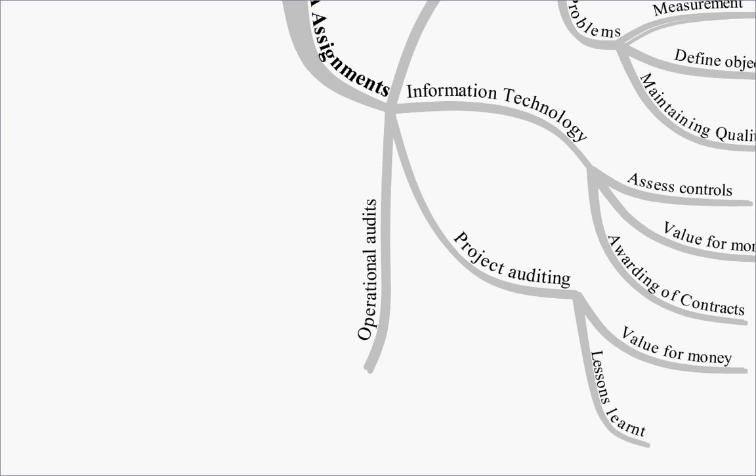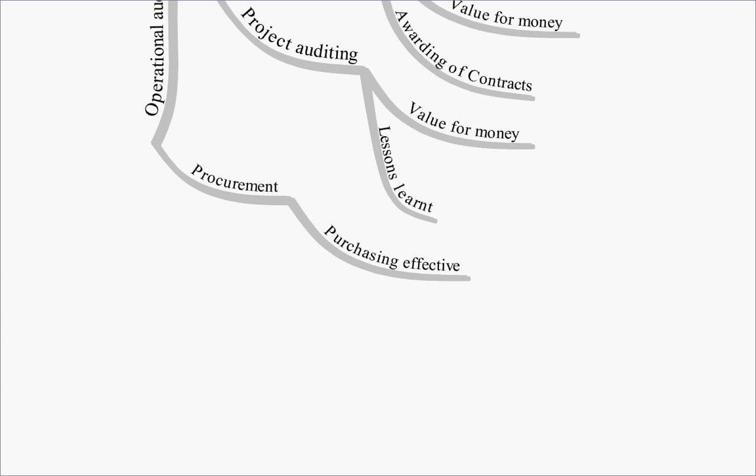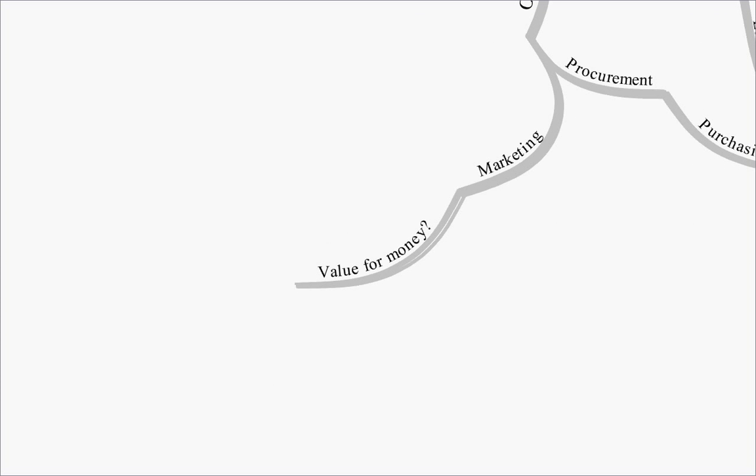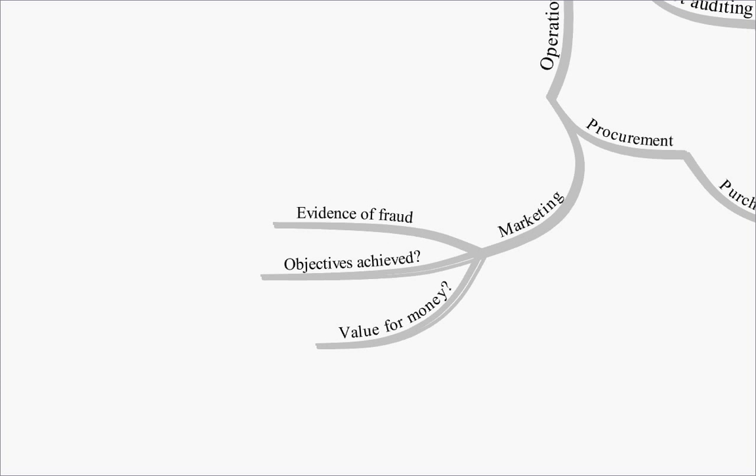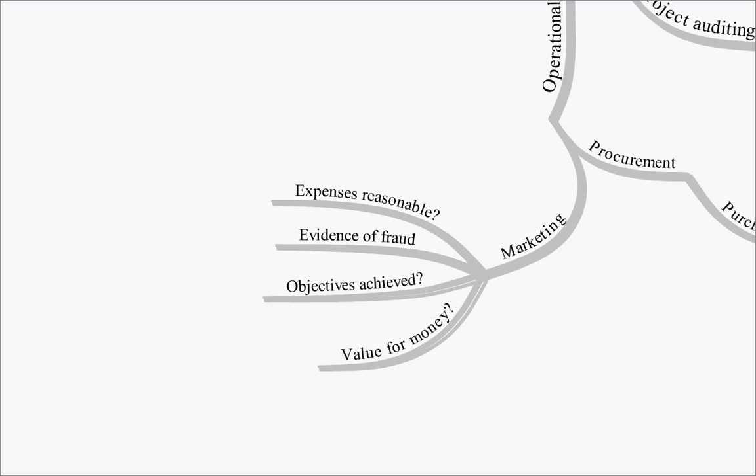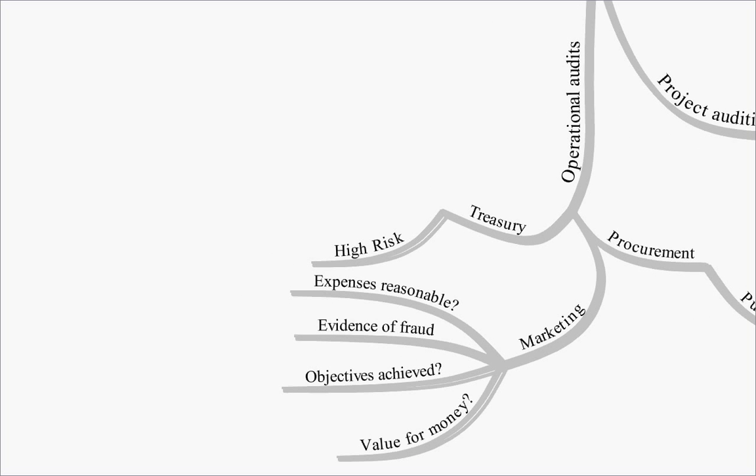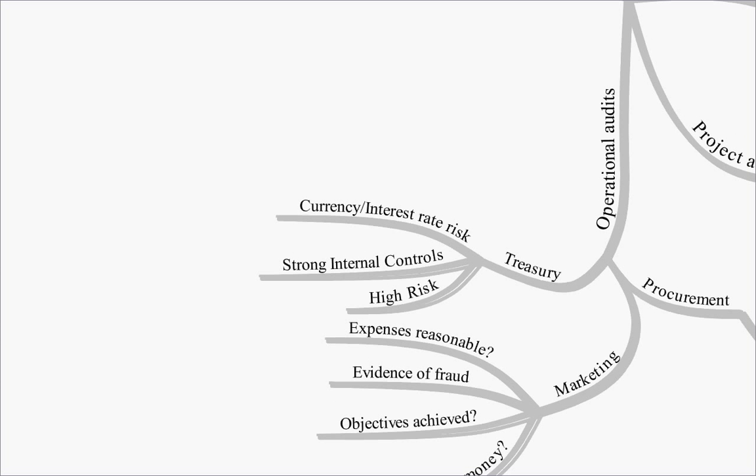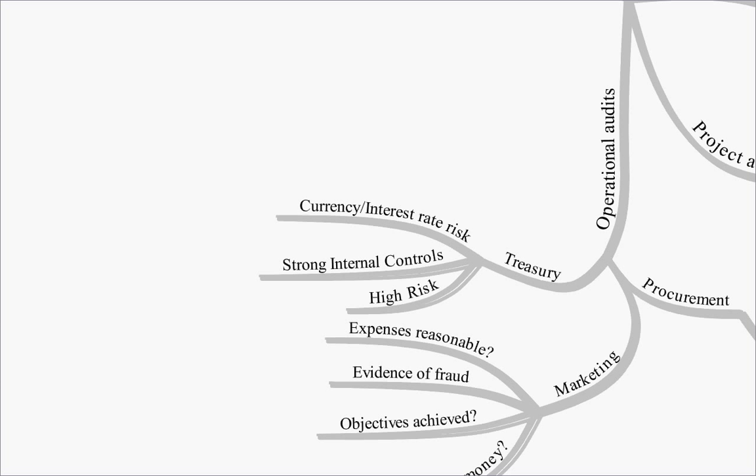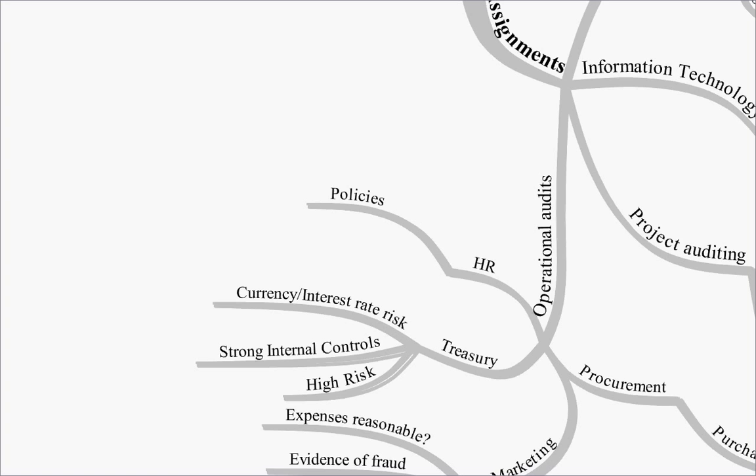Internal audit will also be concerned with operational audits, how are the different functions within the firm operating. On procurement they'll be interested in whether the purchasing function is effective. They may look at the marketing function and see, did they get value for money for the marketing, were the objectives achieved, is there any evidence of fraud within the marketing budget, and were the expenses recovered reasonable. The treasury function, a very very important and very high risk function within a firm. It's very high risk, so you need strong internal controls. And you've got to manage your currency risk, your interest rate risk, all of these things we will come to later on. HR is another function within the firm that internal audit will be interested in. Are they adhering to the firm's policies and procedures.